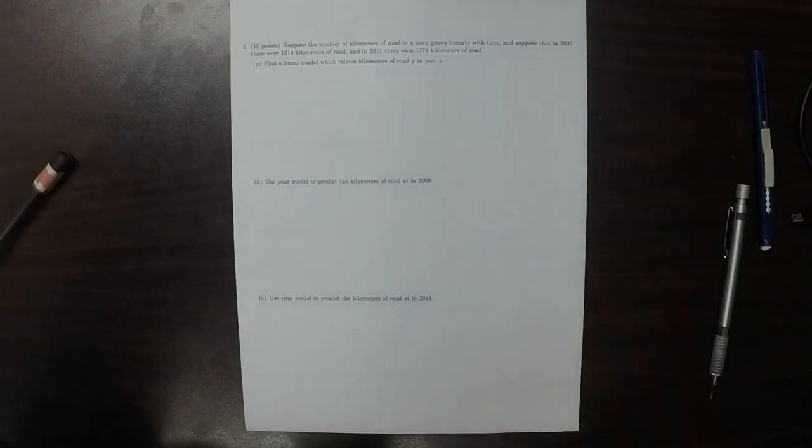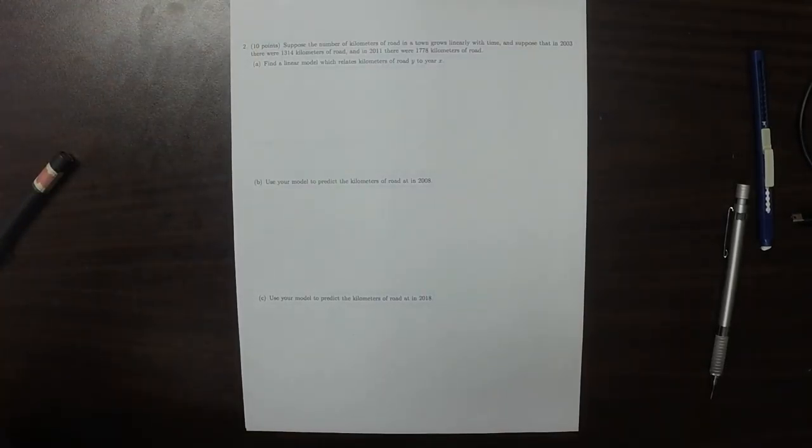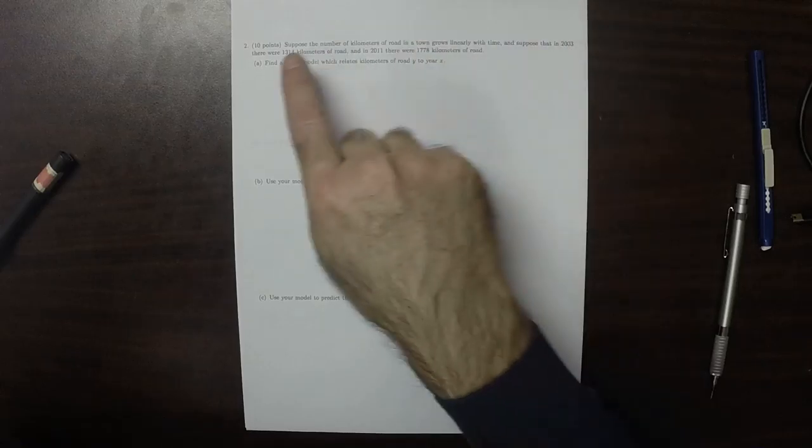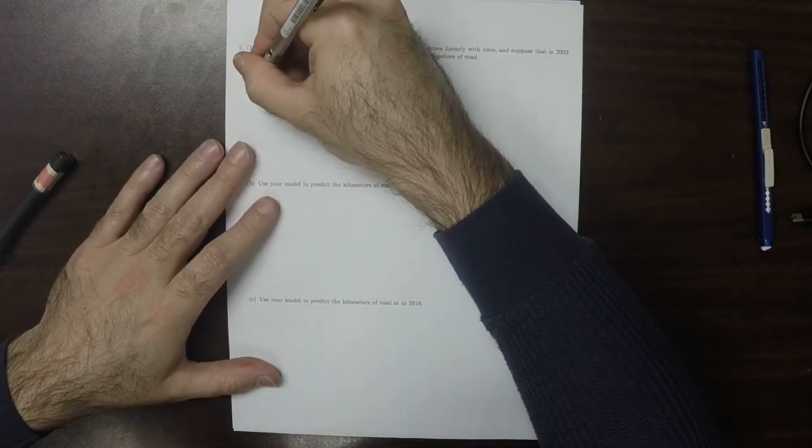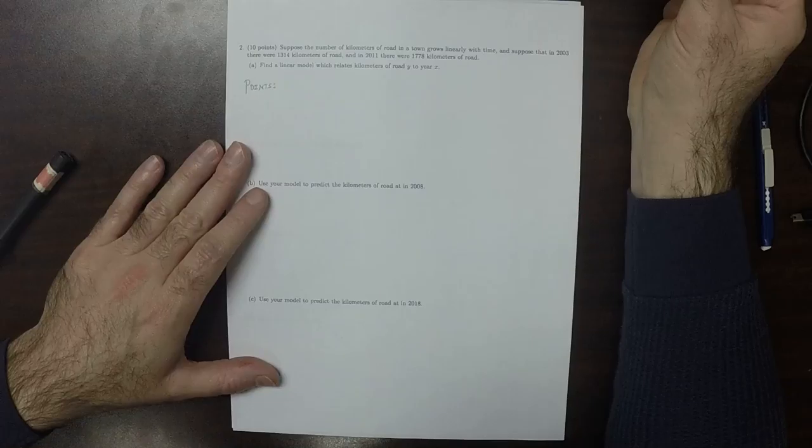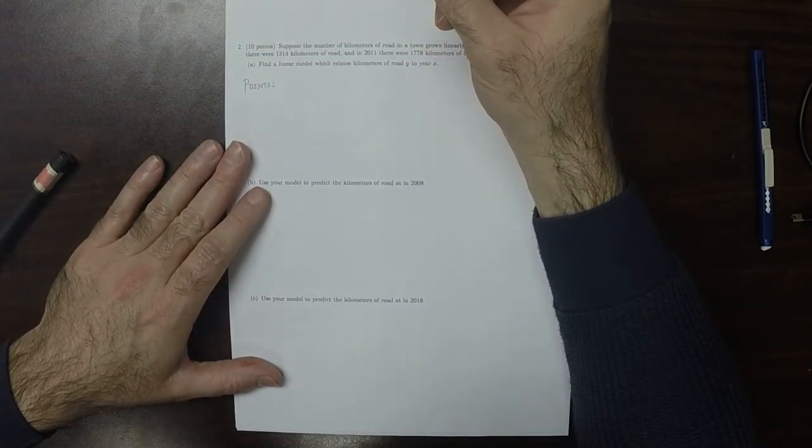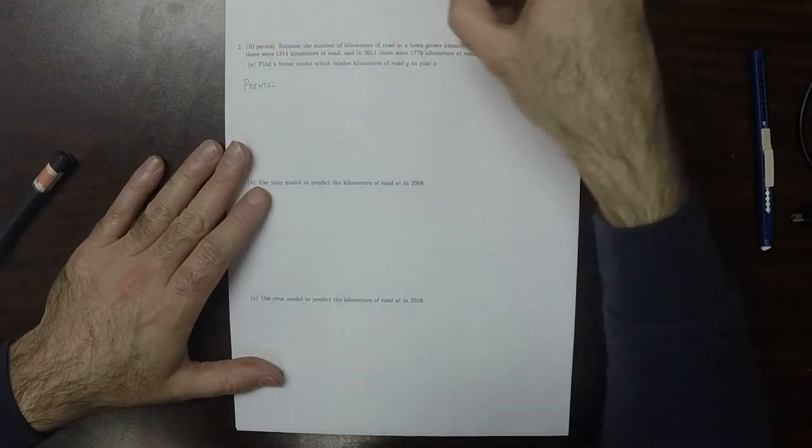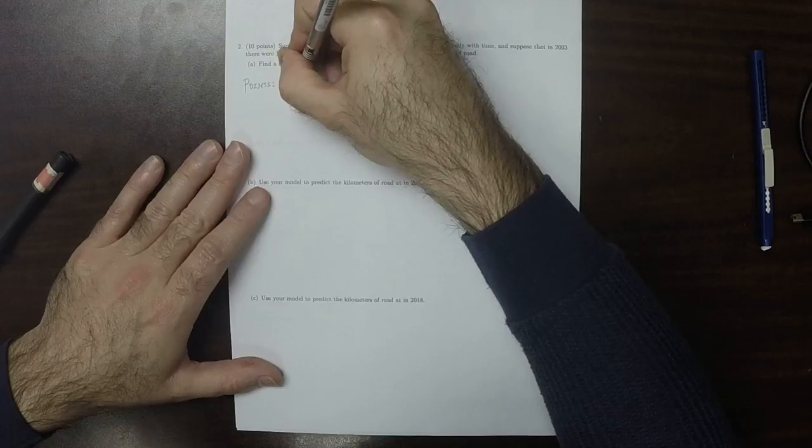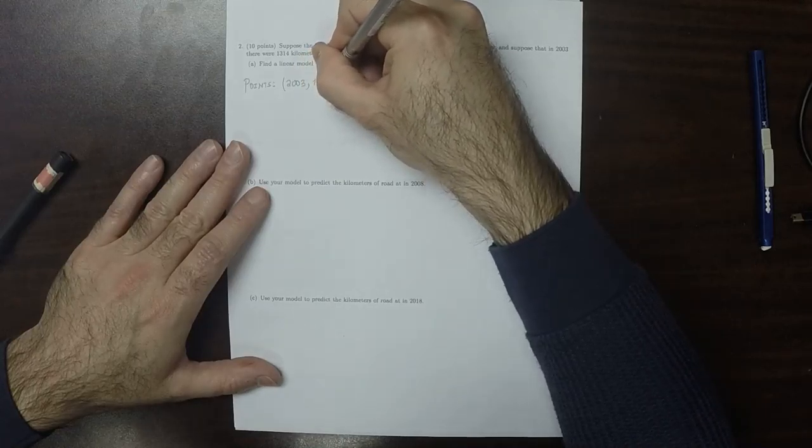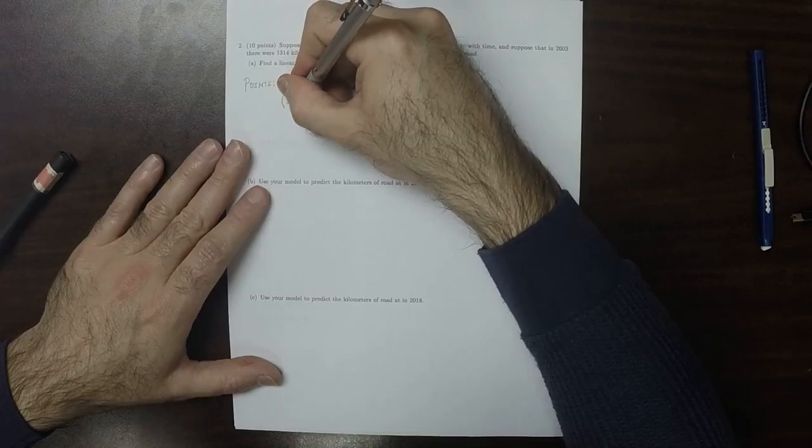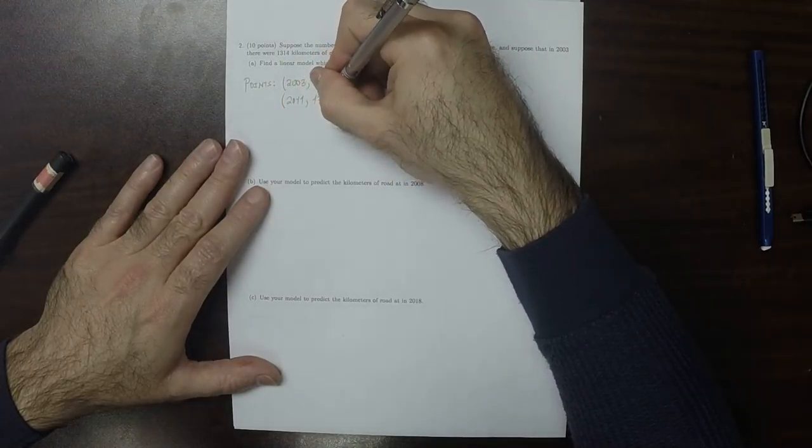Question 2. We've got a story. The number of kilometers of road in a town grows linearly. At this point in time, that much road, and that point in time, that much road. So we know two points. We know that in 2003, which is years are the x coordinate, there were 1,314 kilometers. And in 2011, there were 1,778 kilometers.